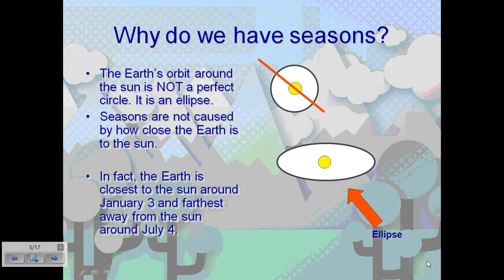To reiterate the concept that seasons are not affected by distance, I want to talk about the orbit of the Earth around the sun. The Earth's orbit around the sun does not travel a perfect circle — it is, in fact, an ellipse. The seasons are not caused by how close the Earth is to the sun during its ellipse. In fact, the Earth is closest to the sun around January 3rd and farthest from the sun around July 4th. So it becomes evident that distance doesn't play the role in the seasons that we may have previously considered.